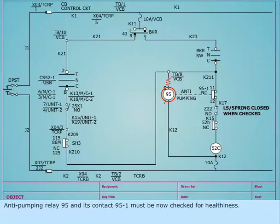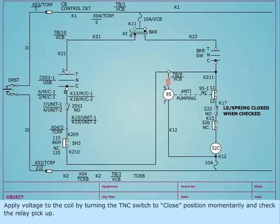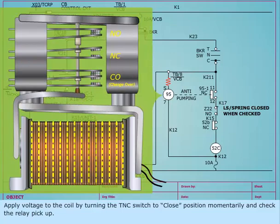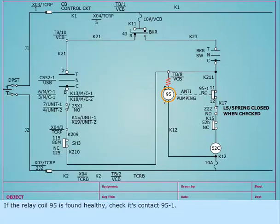Anti-pumping relay 95 and its contact 95-1 must now be checked for healthiness. Apply voltage to the coil by turning the TNC switch to close position momentarily and check the relay pickup. If the relay coil 95 is found healthy, check its contact 95-1.